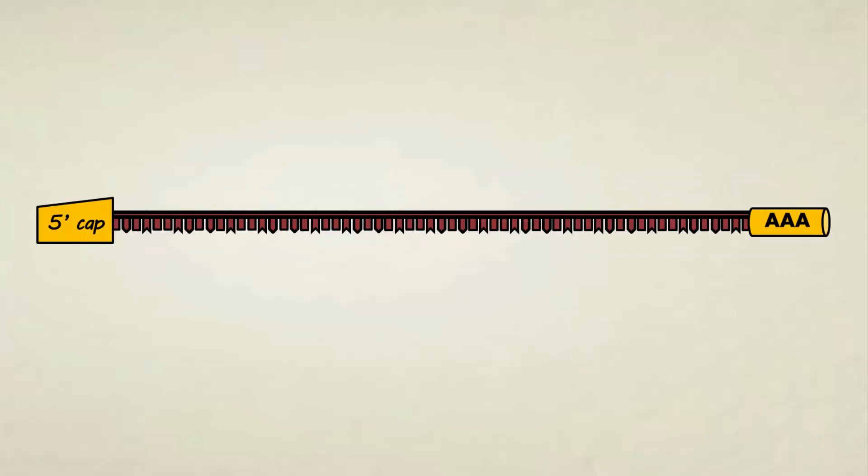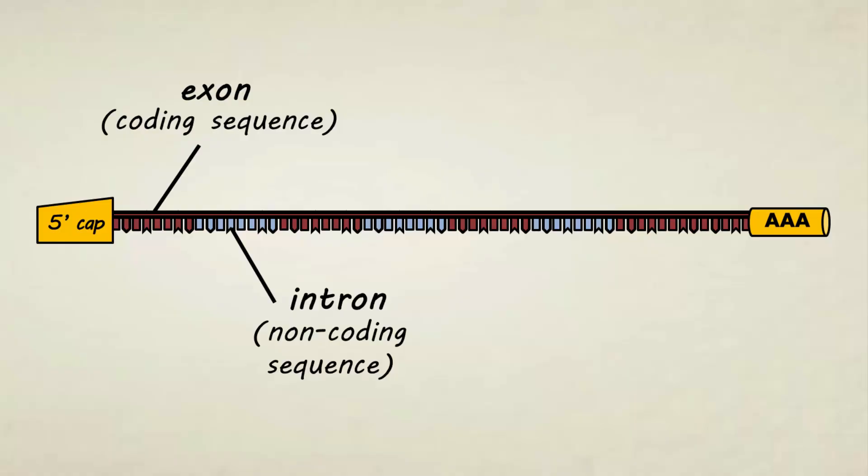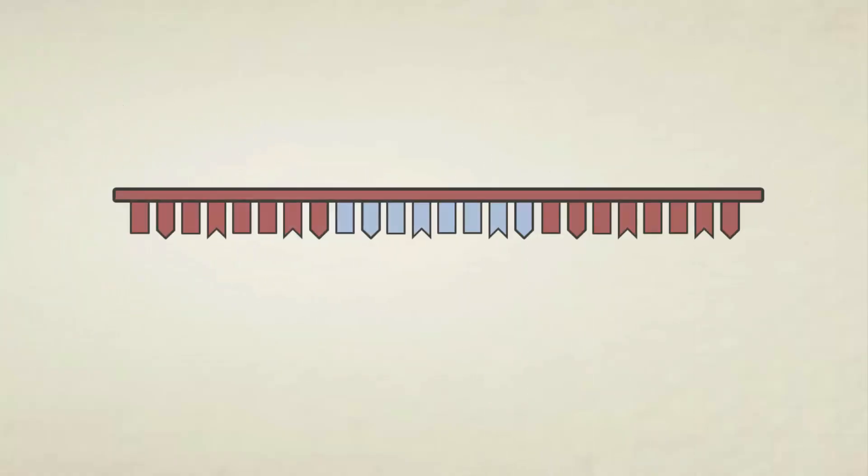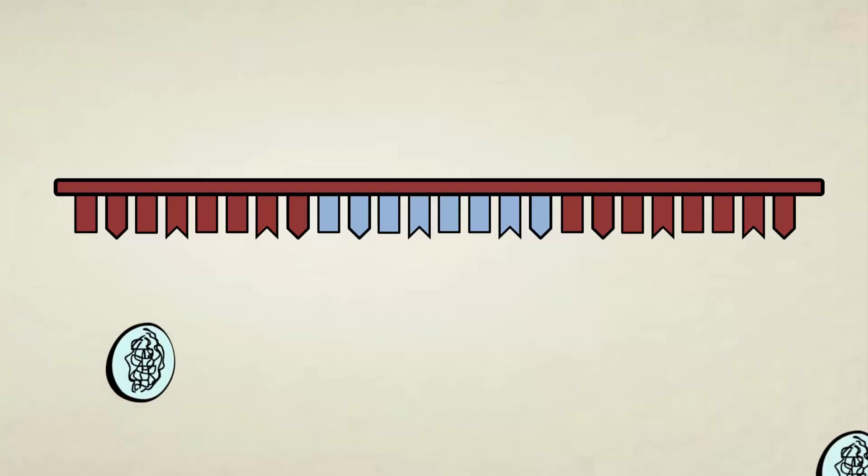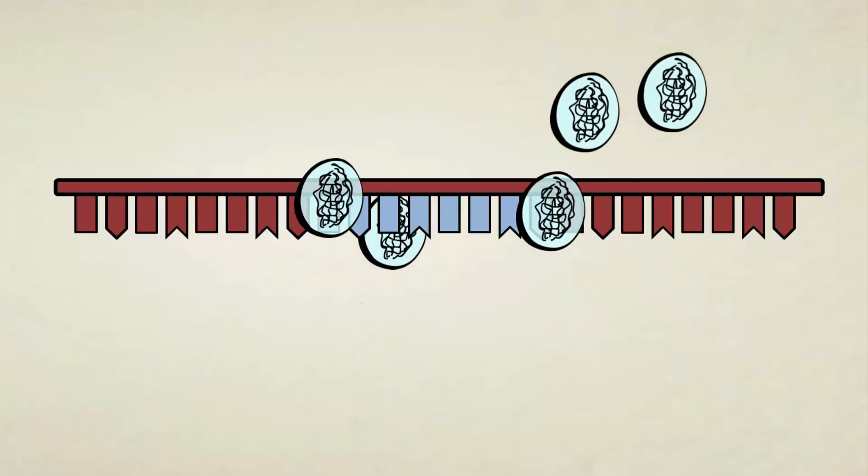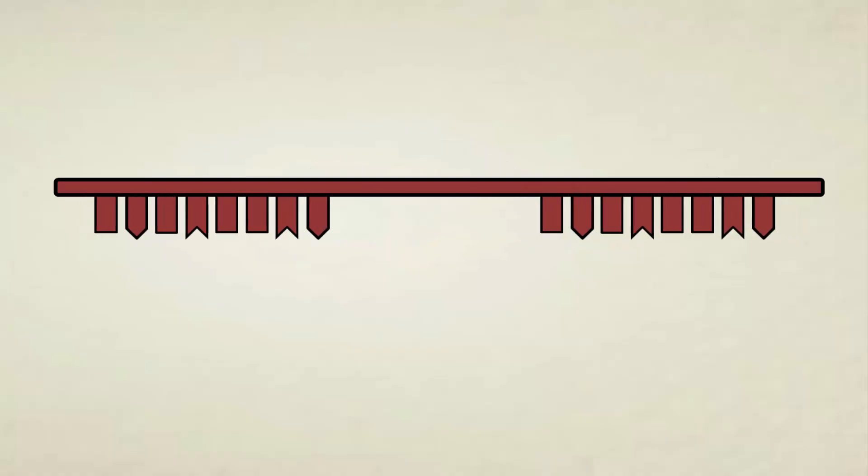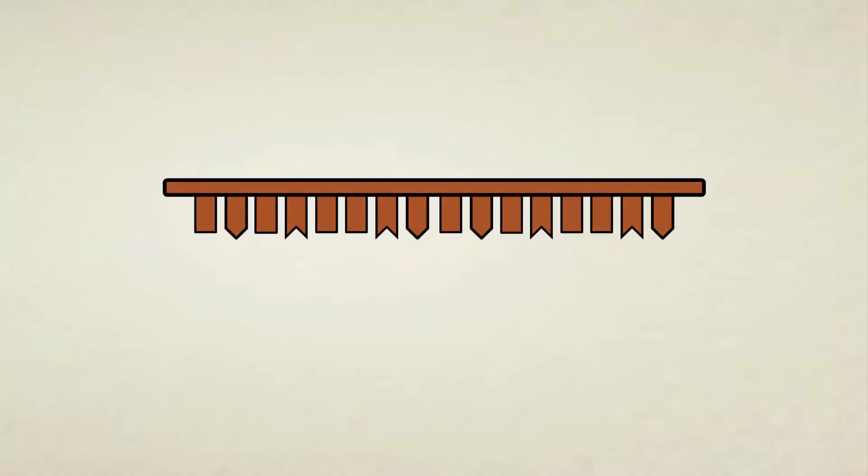mRNA has areas called exons and introns. The exon is what we want. It is a coding sequence which can be used in protein translation. And the intron is a non-coding sequence. It cannot be used for protein translation. So we need to get rid of it. And now we need a spliceosome. Spliceosome is a complex molecule that we will use for cutting the introns. It will bind to the intron and then cut it out. And the leftover are only the exons. Now our mRNA is ready for its job.